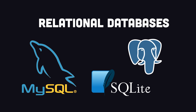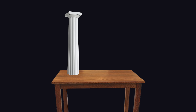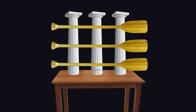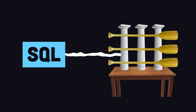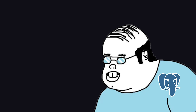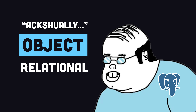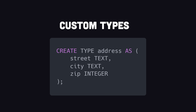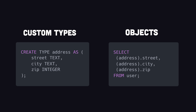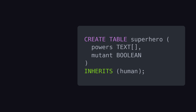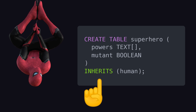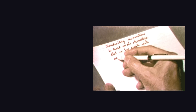Like other pure relational databases, it stores data in tables, columns, and rows, and uses structured query language to read and write data. However, PostgreSQL is technically an object-relational database, which means it can create its own custom data types to store objects with properties and support advanced features like inheritance and polymorphism.